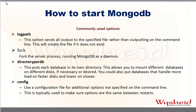The next parameter is --directoryperdb, which indicates that each database will be created in its own directory. Without this parameter, all directories will be created under the single DB path directory. For example, if you have a production database that requires faster data read and write access, you can create a mount point using solid-state disks, specify that as your DB path, and use --directoryperdb so each database has its own directory.